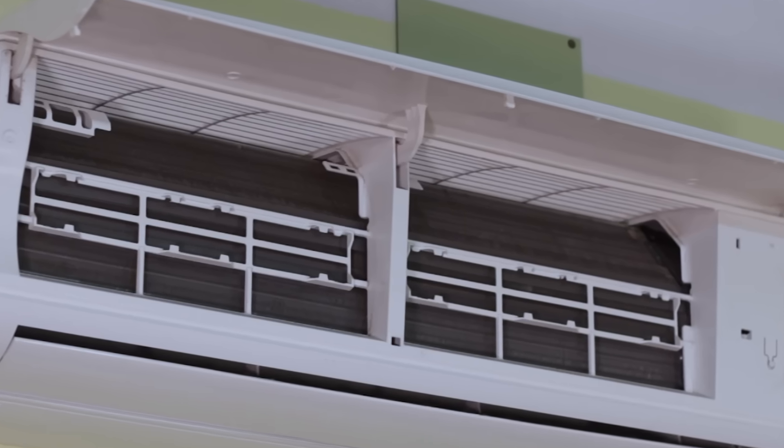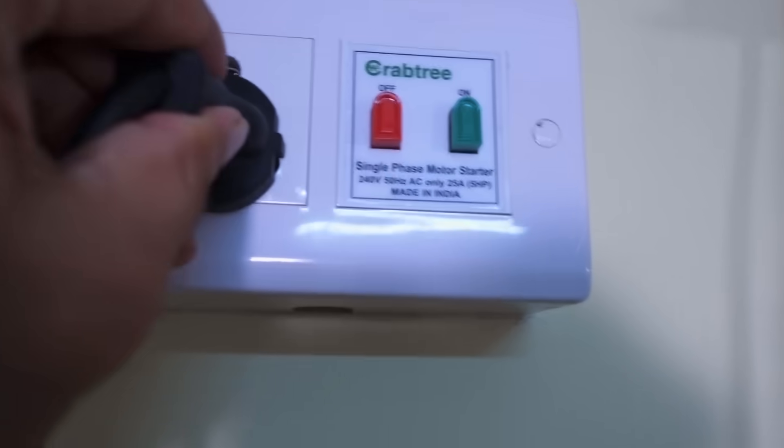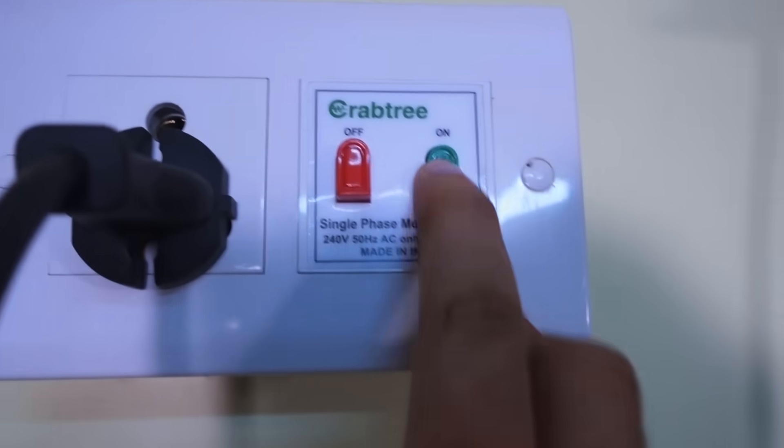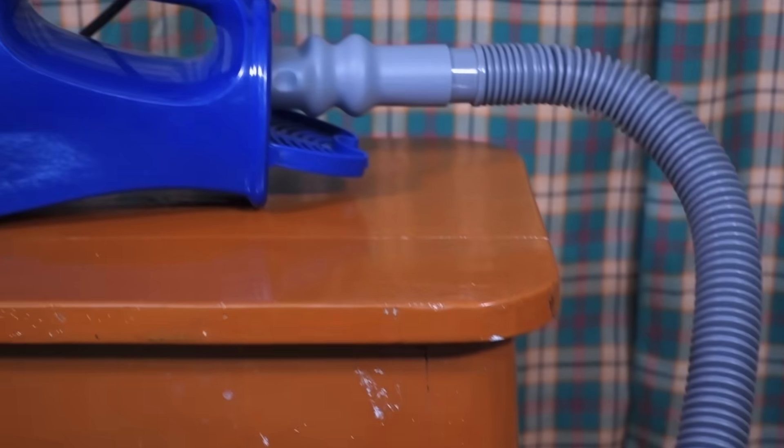After removing air filters you will notice that AC fins are blocked with insane amount of dust. To remove those dust you can use an air blower or an air compressor. I am going to use an air blower. Turn the air blower on and move the air blower head vertically and make sure blower head doesn't touch the AC fin.